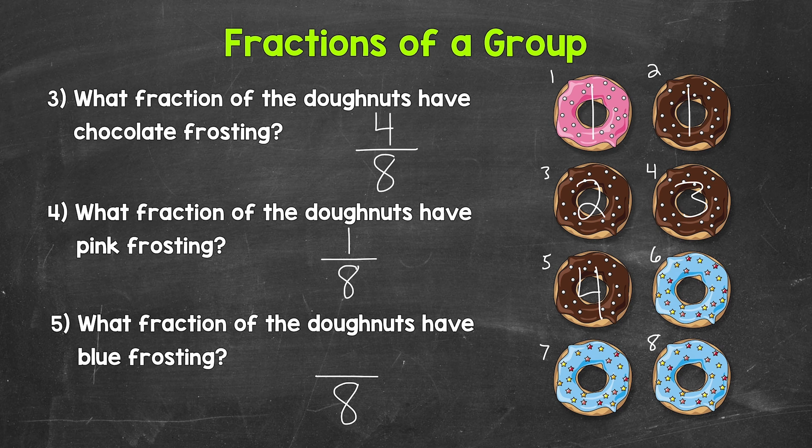So how many of those 8 total donuts have blue frosting? 1, 2, 3. 3 out of the 8 donuts have blue frosting. So 3 is our numerator. Our fraction is 3 eighths.